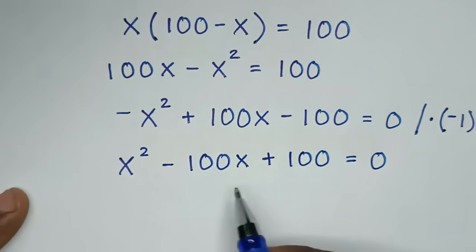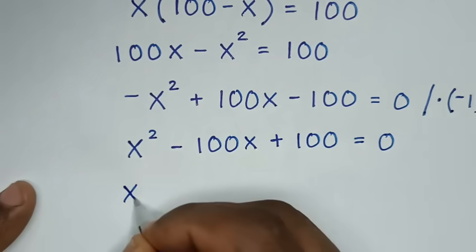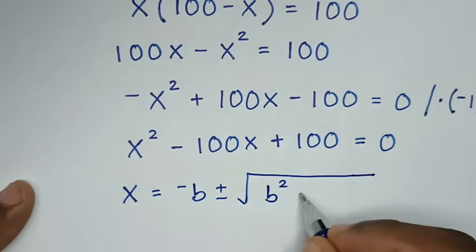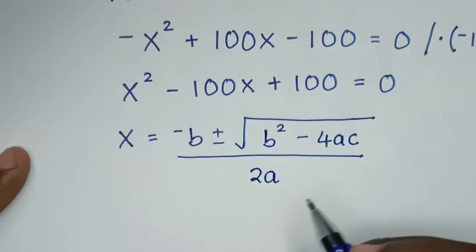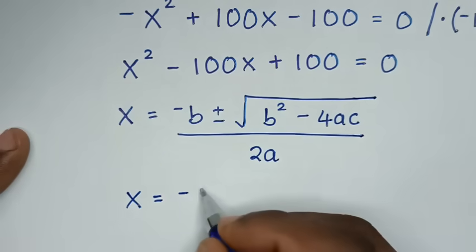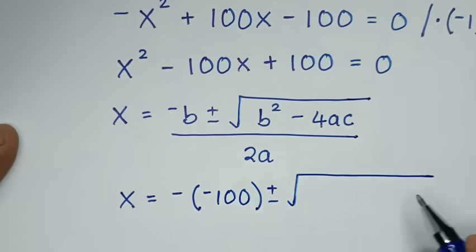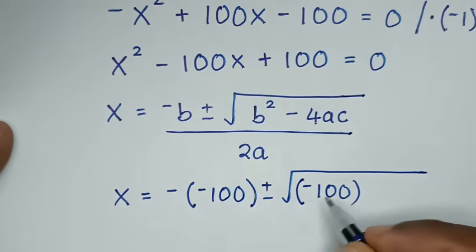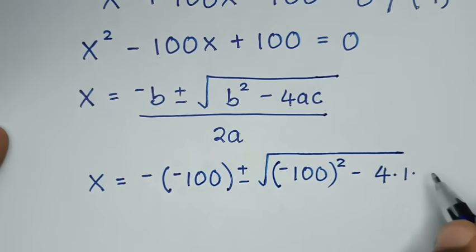From this quadratic equation, to find the values of x we will use the quadratic formula. From the quadratic formula, x is equal to negative b plus or minus square root of b squared minus 4ac, over 2a.